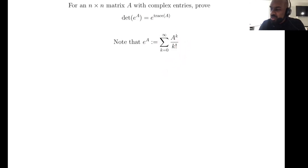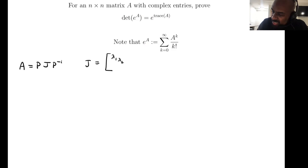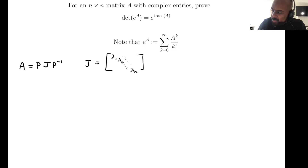To start off, we're going to make a little observation. If you have a matrix A, you can always write it as P times J times P inverse, where J is a matrix that has the eigenvalues of A on its diagonal, potentially with some other stuff, and is upper triangular, so there are zeros everywhere below the diagonal.